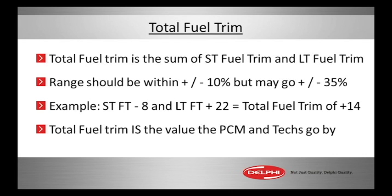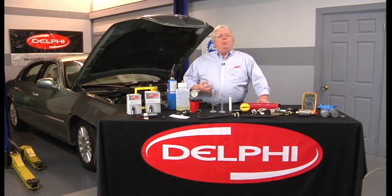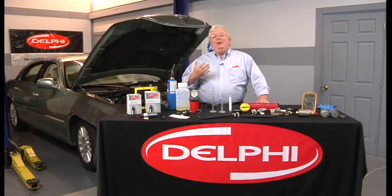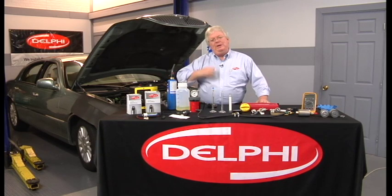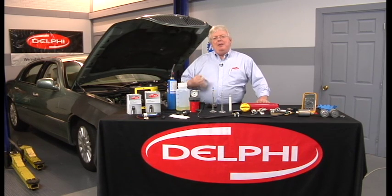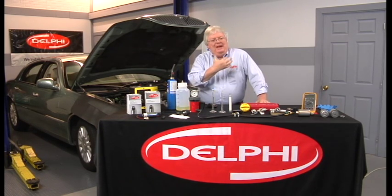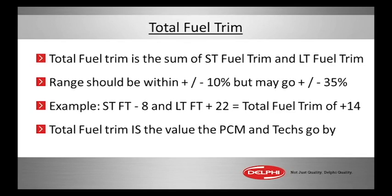For example, if our long term would go 22% positive — meaning we've learned over a long period of time we needed to add 22% — but at a precise moment we see negative 8 on short term, we add those two integers together: negative 8 and positive 22 equals positive 14.